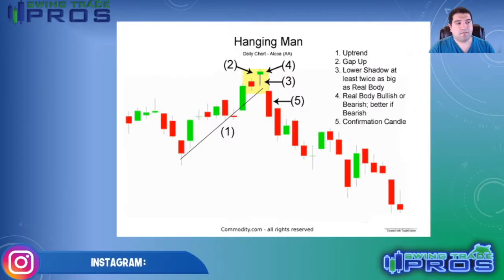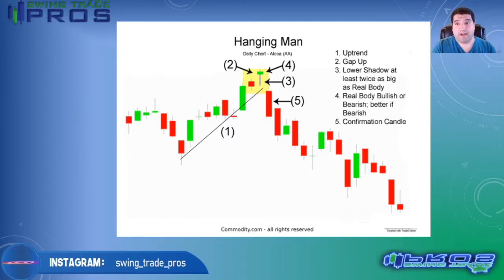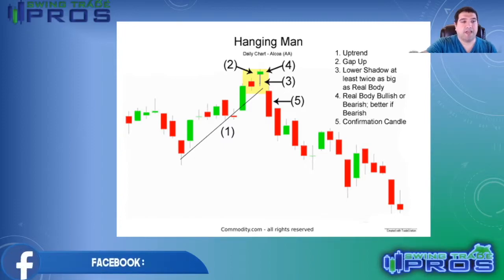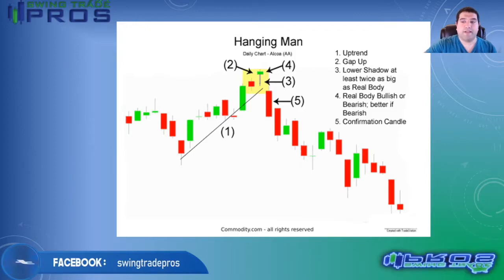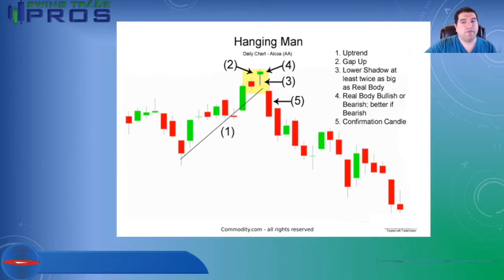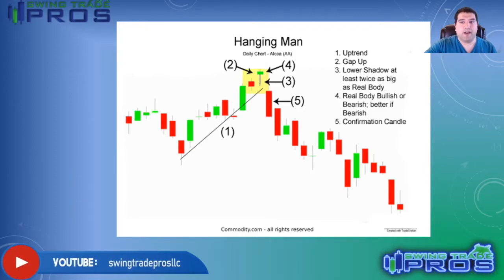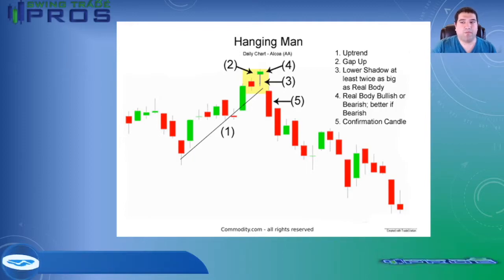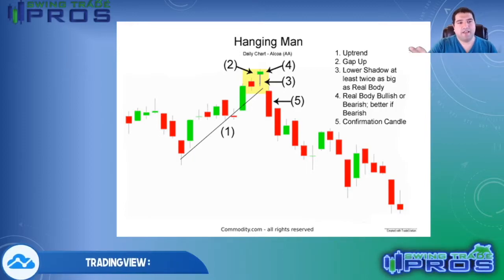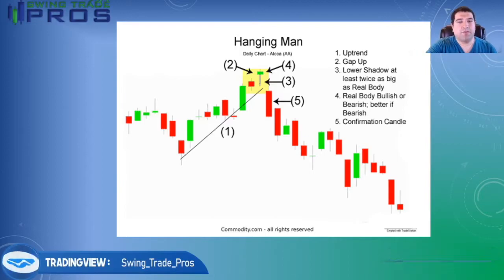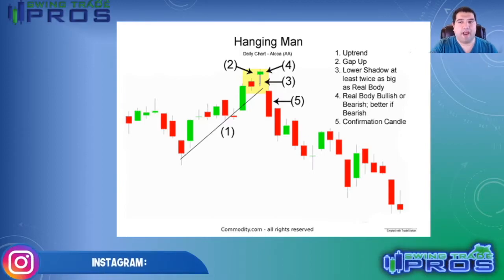The hanging man towards the top of the pattern led straight to a move to the downside. It forms in an uptrend with a gap up and a lower shadow at least twice as big as the real candle body. You guys can take a look at this picture — it explains exactly how the hanging man is identified.